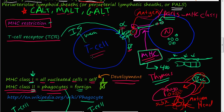Welcome to the Part 2 video on T-cells. In the first video we talked about the T-cell receptor, the TCR, which is right here on the T-cell. We also talked about the major histocompatibility complex and how MHC restriction refers to the fact that each person's MHC is unique — every person has a different makeup of the proteins that make up this major histocompatibility complex.